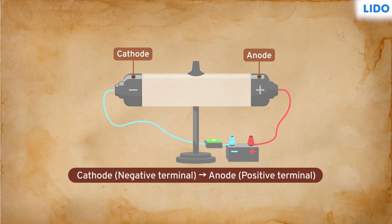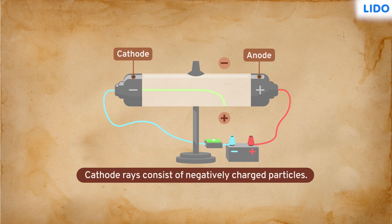In the same experimental setup, he applied an electric field. He observed that the rays changed their path under the influence of the electric field. They showed deflection from the negative charge. This led to the conclusion that the cathode rays consist of negatively charged particles.